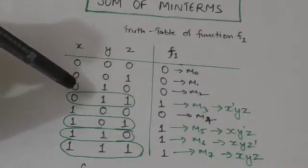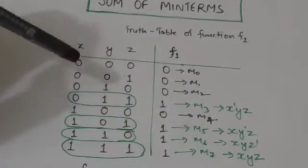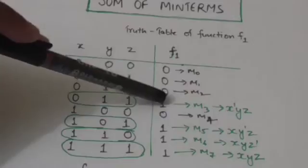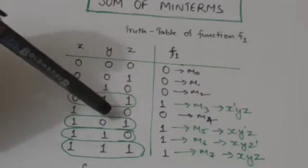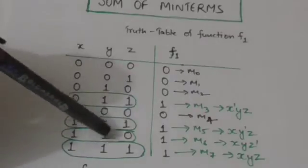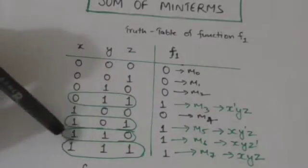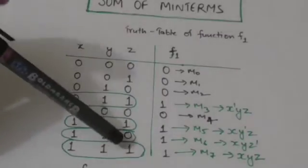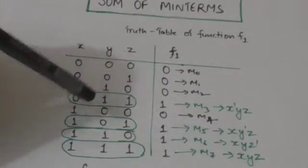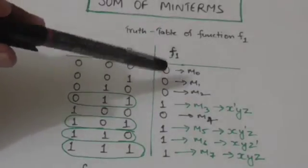These are the rows for which the value of function f1 is 1. When x is 0, y is 1, and z is 1, the function is 1. When x is 1, y is 0, and z is 1, the function is also 1. When x is 1, y is 1, and z is 0, f1 is 1. And when x is 1, y is 1, and z is also 1, f1 is 1. These are the four combinations of x, y, and z for which the function gives the output 1.